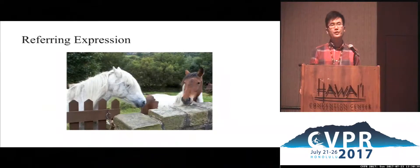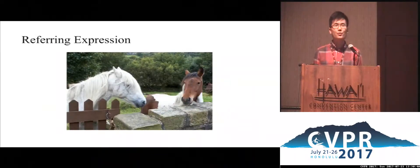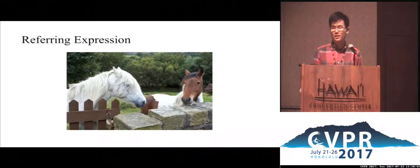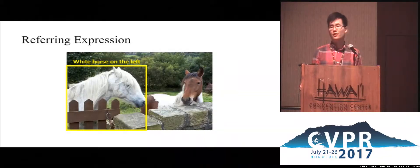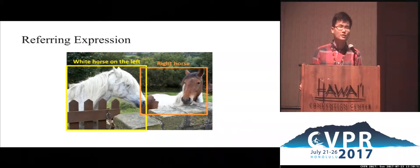A referring expression is how people use human language to identify a particular person or object in an image. For example, to refer this horse, we could say 'white horse on the left.' To refer that horse, we could say 'white horse' directly.